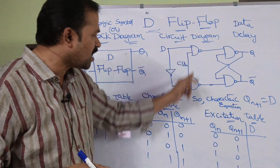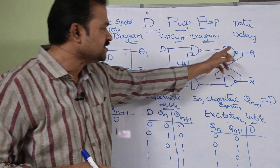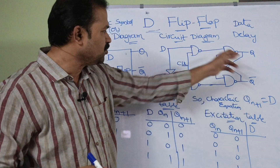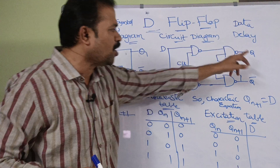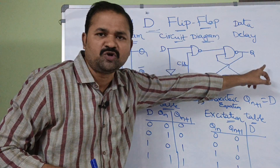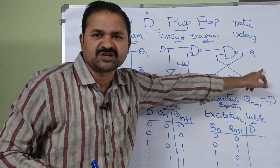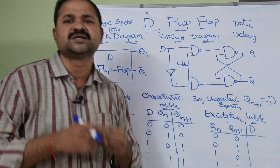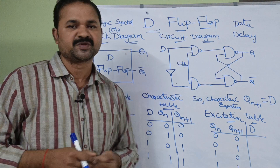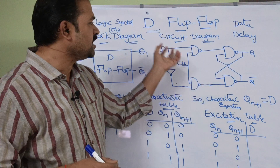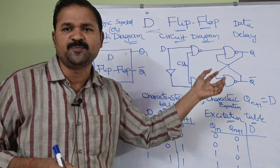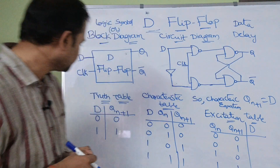We need to apply the clock pulse here — this is essentially a latch. A flip-flop produces two outputs: the first output is Q and the second output is Q bar. So this is about the circuit diagram of the D flip-flop using NAND gates.